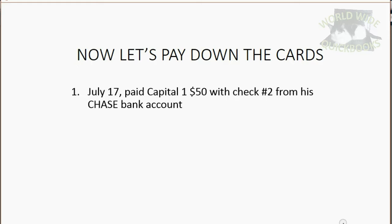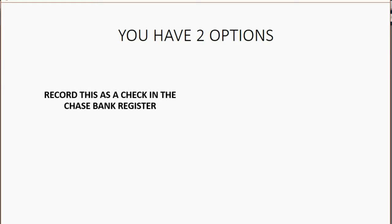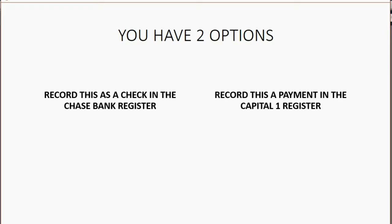Now let's pay down some of the credit cards. On July 17th, pay Capital One $50 with check number 2 from Holden's Chase Bank account. You have two options: you could record it as a check in the Chase Bank register, or you could record this as a payment in the Capital One register — it doesn't matter. The result in both registers will be exactly the same. I would like to record it in the Capital One register as a payment, making the reference number the check number — check number 2.